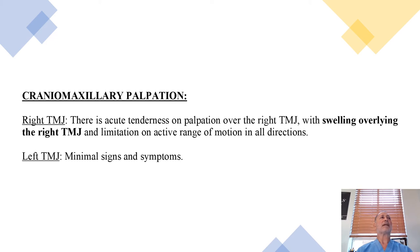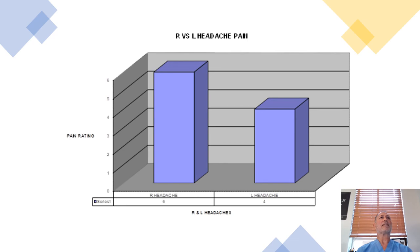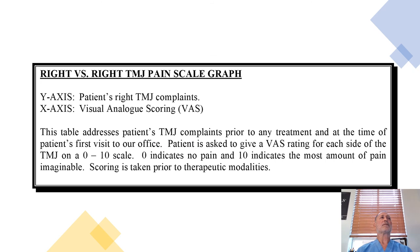Craniomaxillary evaluation: The right TMJ showed acute tenderness and swelling overlying the TMJ. The left TMJ demonstrated minimal signs and symptoms. This is a graph demonstrating the right-sided headaches — one of her complaints — as compared to the left side of her head. These are all using the visual analog scale (VAS), where the patient puts a line between 0 and 10. That's a subjective finding given by the patient. We would do that for all the patient's complaints; it's a good way to document patient progress, done each visit or once a month to assess lack of improvements.